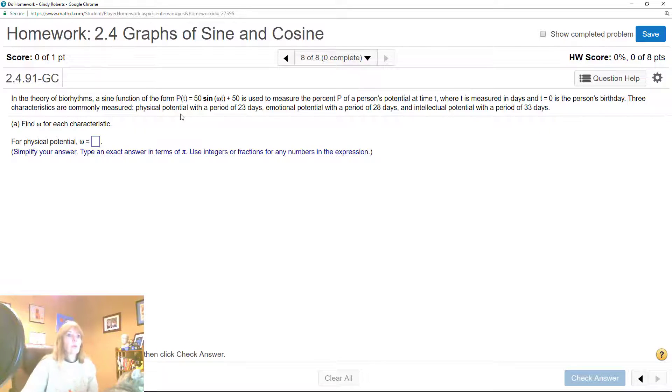Hopefully that happens on test day, right? This first part they're asking you to find omega. If you remember the formula for the period was T equals 2π over omega. Well, if the period is, which one am I looking at, physical 23, then this would simply be 2π over 23.